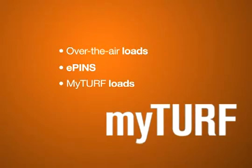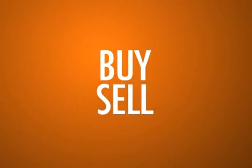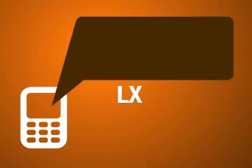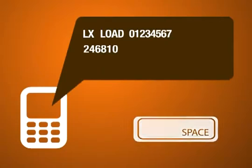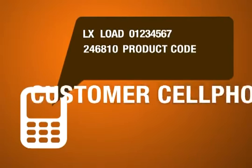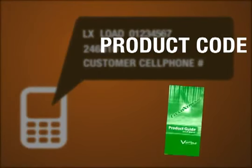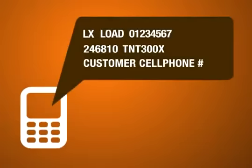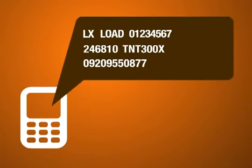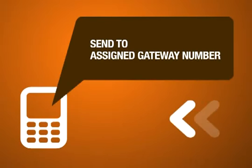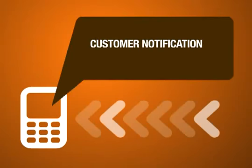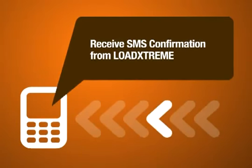MyTurf loads are over-the-air loads that provide rewards under the MyTurf program. To buy or sell load, just type: LX space load space your ID number space your PIK space product code space customer's cell phone number. Product codes can be found on your product guide or price list brochures. Make sure all information entered is correct, particularly the product code and the customer's cell phone number, then send the SMS command to your assigned gateway. If successful, your customer will receive a notification from the telco and you will receive an SMS confirmation from Load Extreme.